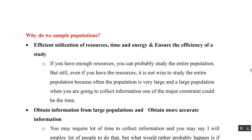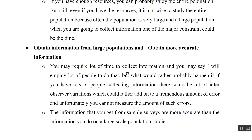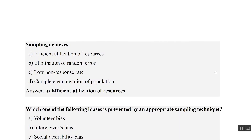Why do we sample a population? Why can't we take the entire population? Because that will waste resources, time, and energy. For efficient utilization of resources, time, and energy, we take samples. We want to obtain information from large populations and obtain more accurate information — that's why sampling surveys provide more accurate information rather than large-scale population studies. Sampling achieves efficient utilization of resources.